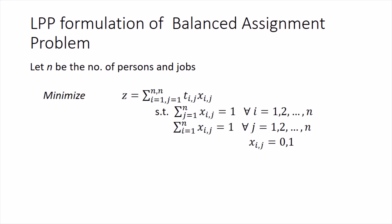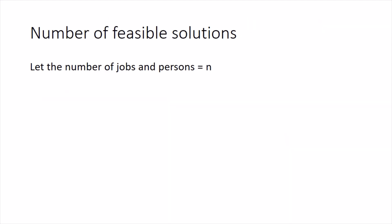Now let's talk about what can be the number of feasible solutions of a balanced assignment problem. Suppose the number of jobs and number of persons is the same which is N, and then let's try to make the combinations. First person can be assigned any one job out of N jobs.